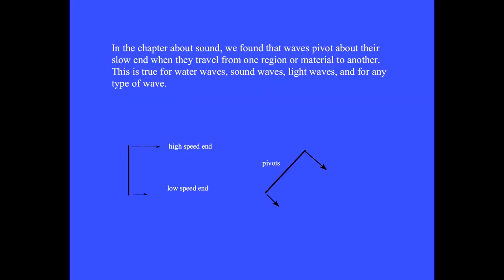In the chapter about sound, we found that waves pivot about their slow end when they travel from one region or material to another. This is true for water waves, sound waves, light waves, or for any type of wave.